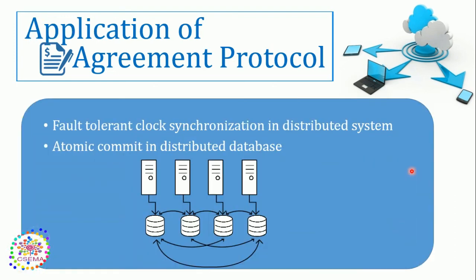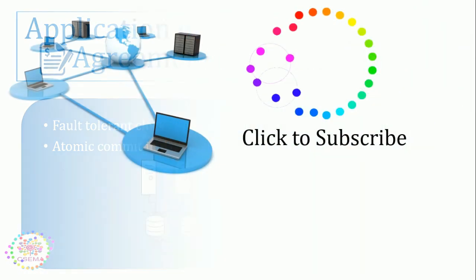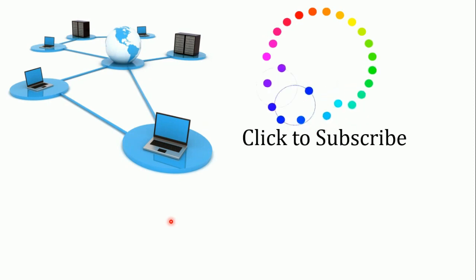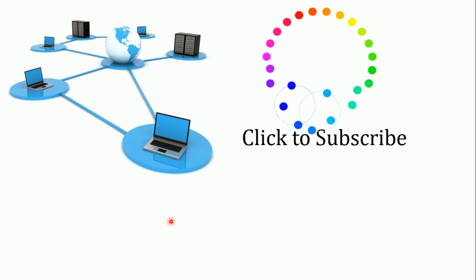At the last, we have the applications of the agreement protocol. Agreement protocols are used in a distributed system environment to synchronize clocks — fault-tolerant clock synchronization. It helps systems reach a common mutual agreement to perform atomic commit events. Thank you. Thanks for watching. You can also find more details in the description or PDF for the same.